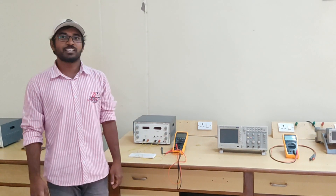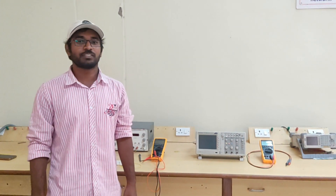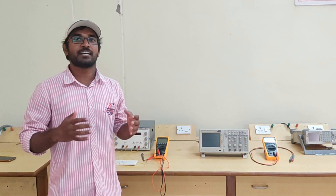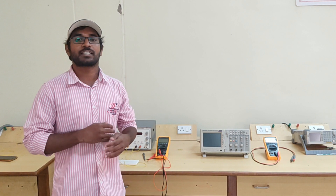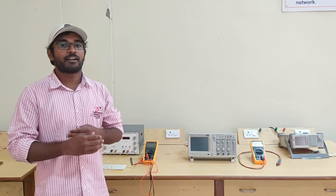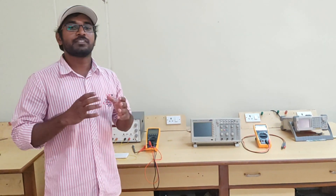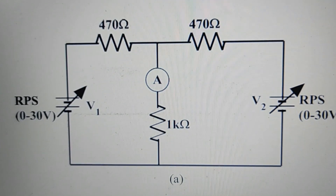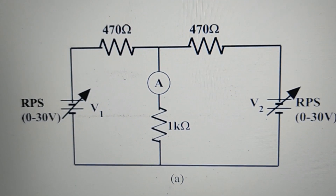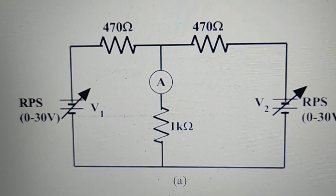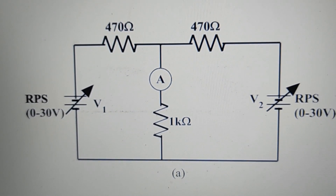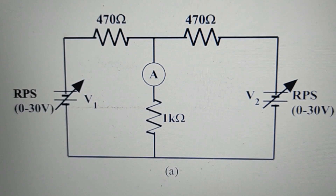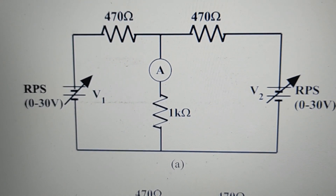Hello everyone, we are here to verify the superposition theorem. According to the theorem, in any linear active bilateral network having more than one source, the response across any element is the sum of the responses obtained from each source considered separately, while all other sources are replaced by their internal resistance. The superposition theorem is used to solve networks where two or more sources are present. In the circuit diagram we have three resistors — 470 ohms, 1 kilo ohm, and 470 ohms — and two voltage sources with a range of 0 to 30 volts.